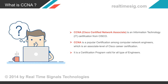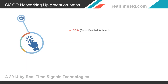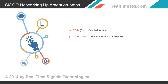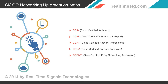It is a certification program valid for all types of engineers. The Cisco networking upgradation paths are as follows: the highest level is Cisco Certified Architect (CCA); the expert level is Cisco Certified Internetwork Expert (CCIE); the professional level is Cisco Certified Network Professional (CCNP); the associate level is Cisco Certified Network Associate (CCNA); and the first and entry level is Cisco Certified Entry Networking Technician.